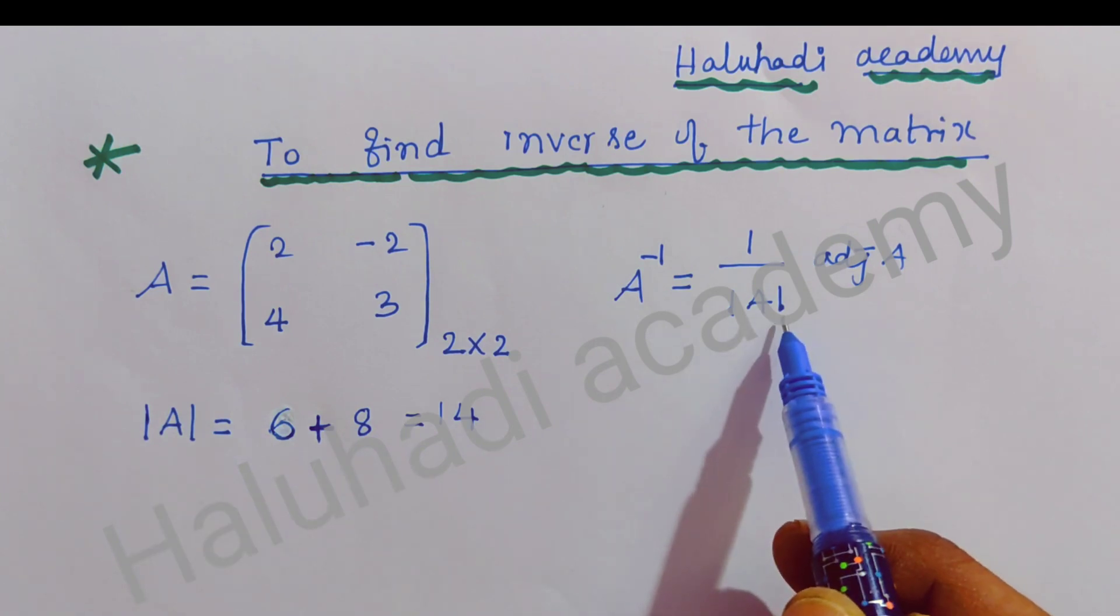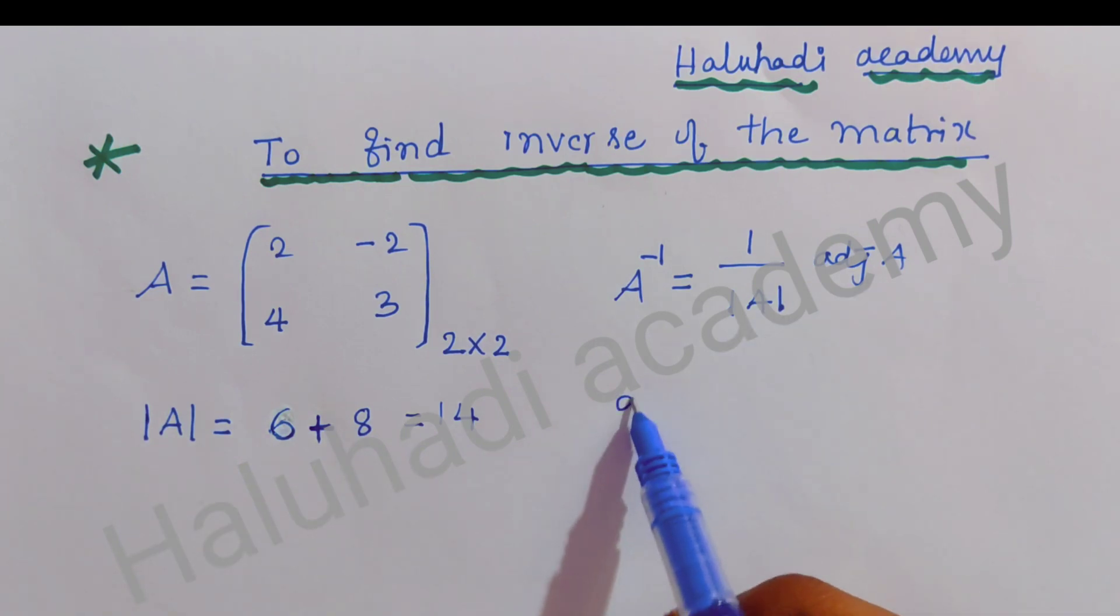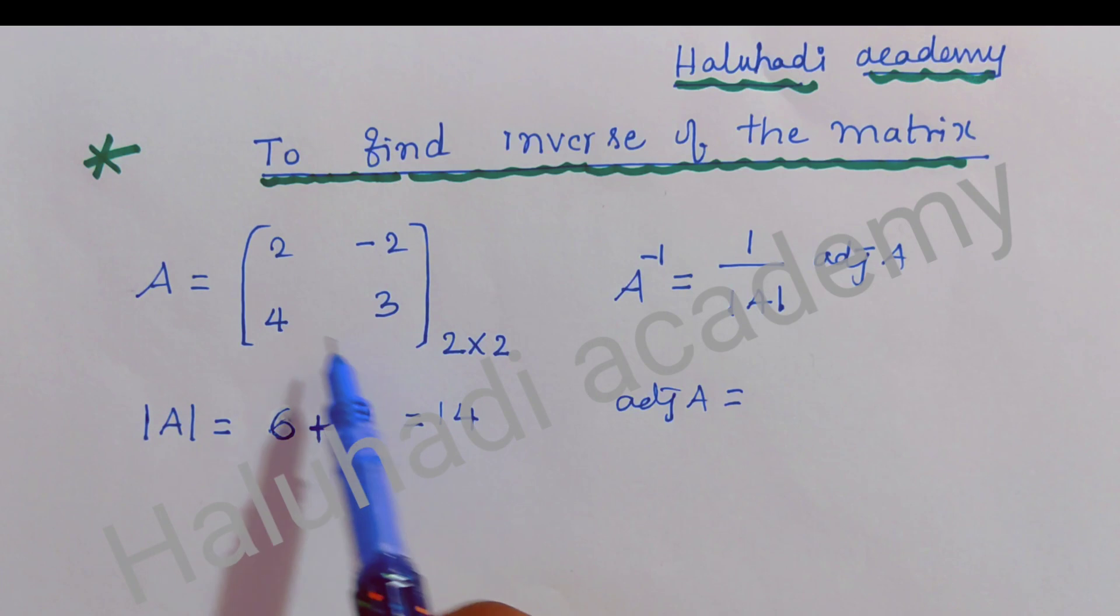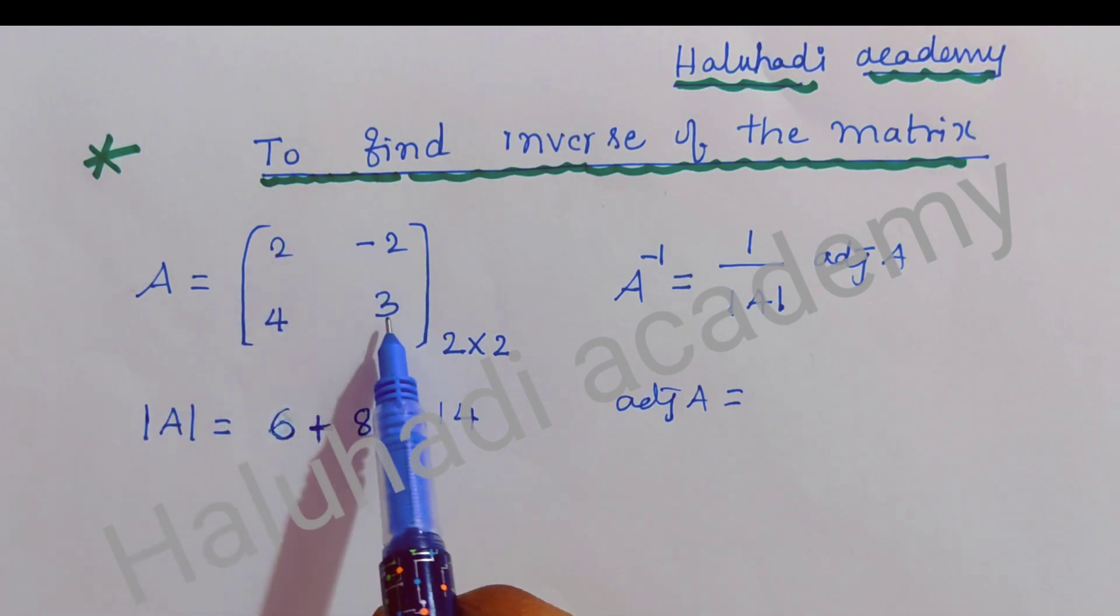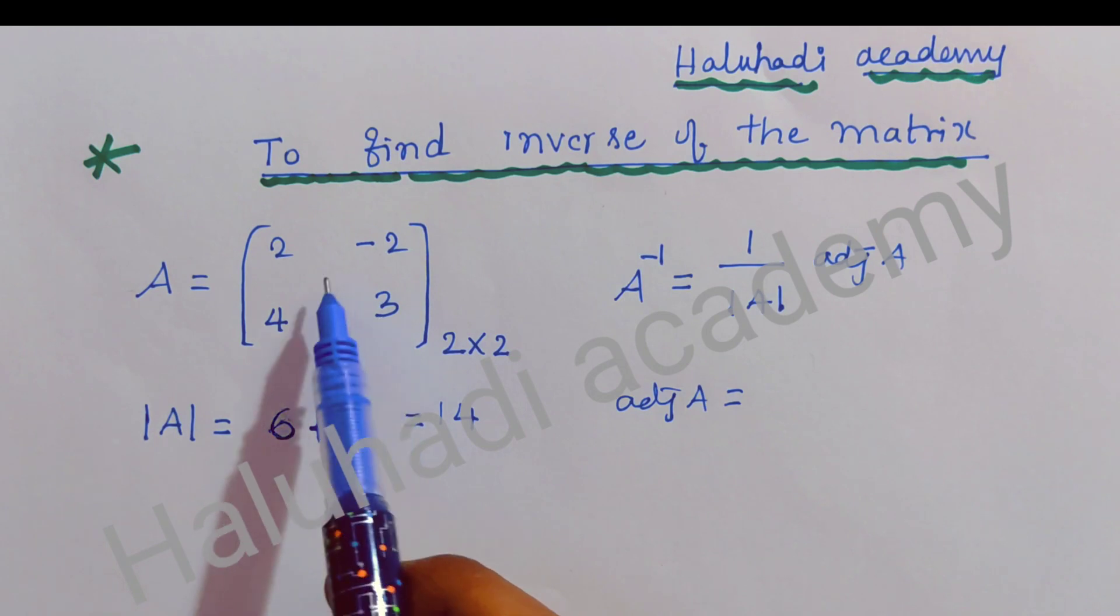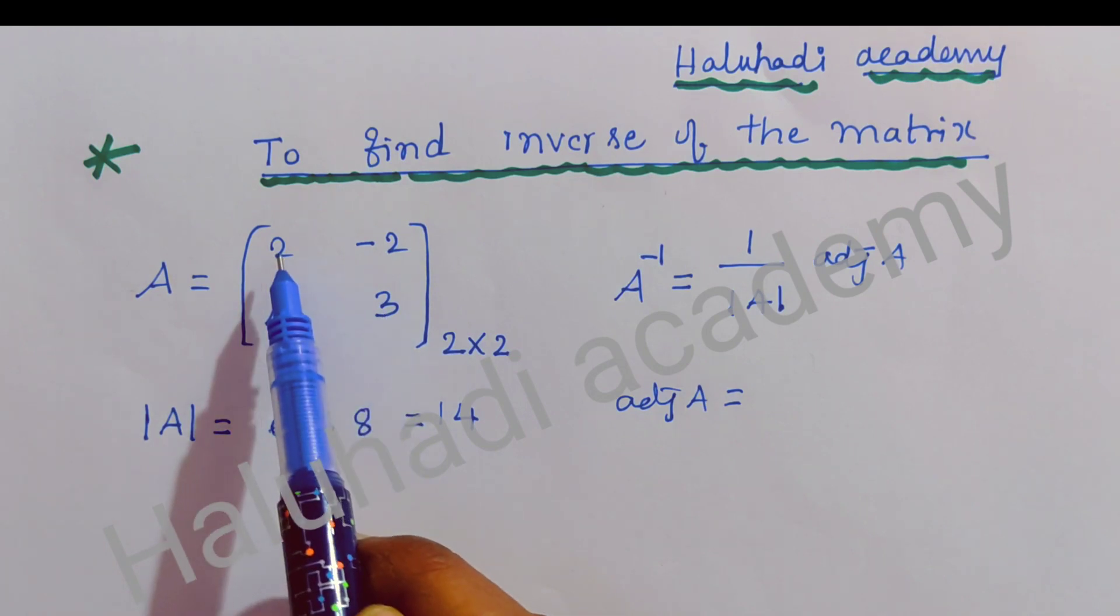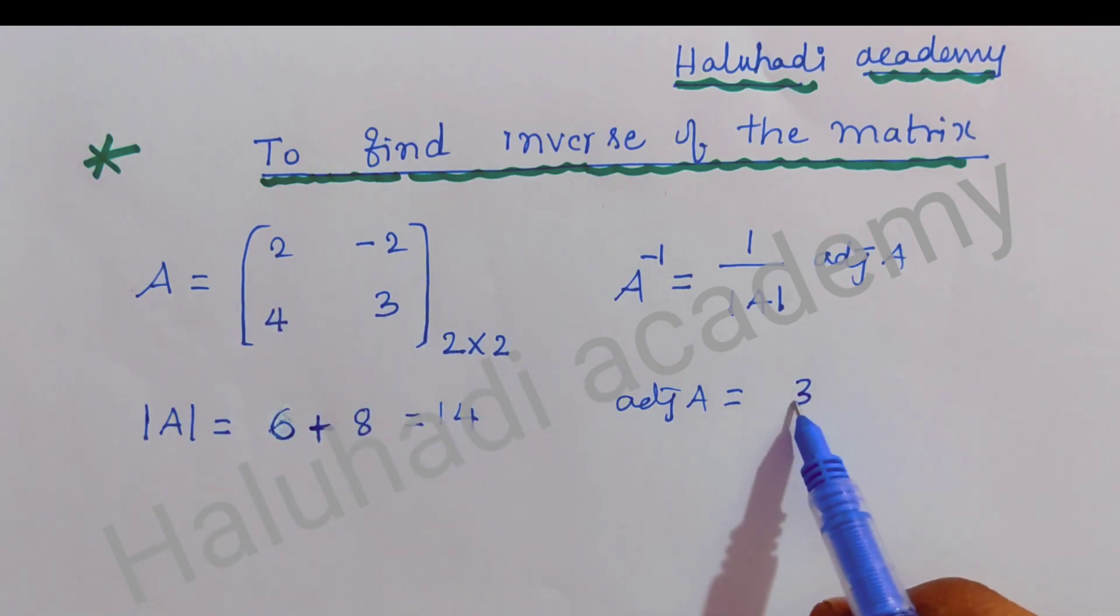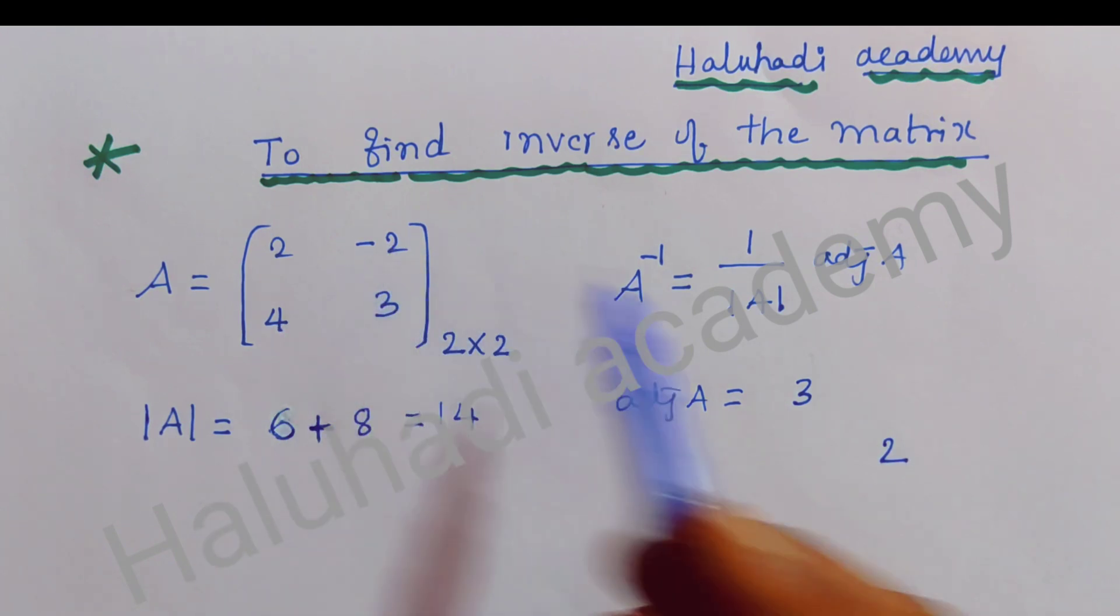We have to find adjoint A. There's a simple trick: for the elements on principal diagonal, first change the places. So 3 comes here and 2 goes there. Exchange these numbers, so it becomes 3 and here it is 2.